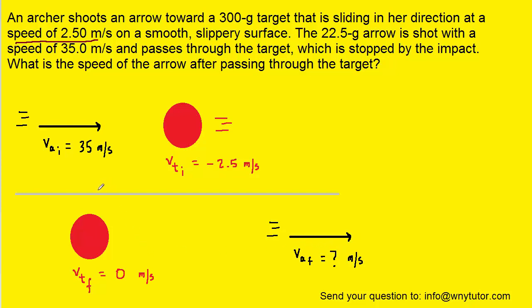Now, since this is a collision, we can use the conservation of momentum, which states that the total final momentum of the system is equal to the total initial momentum of that same system.